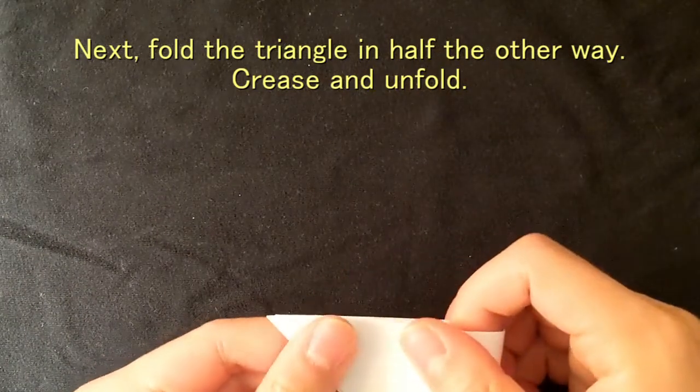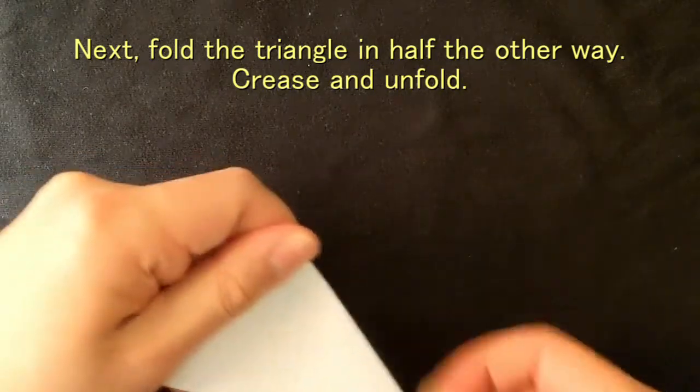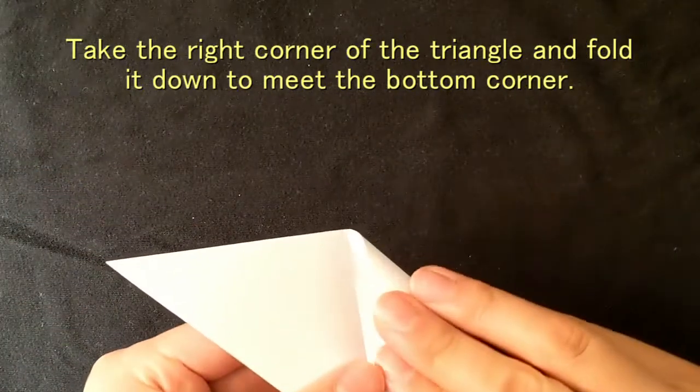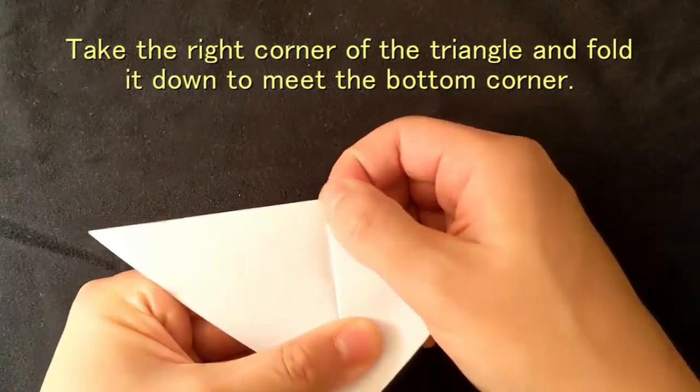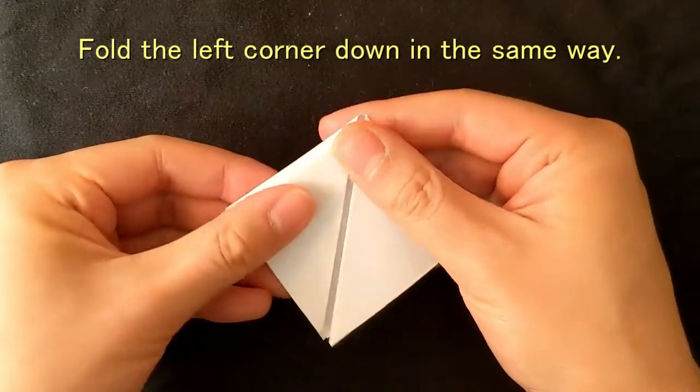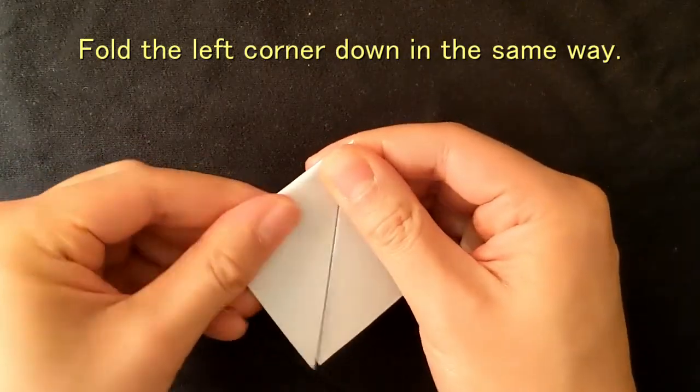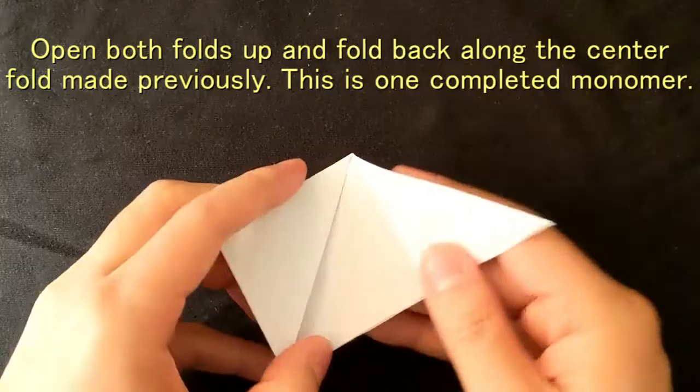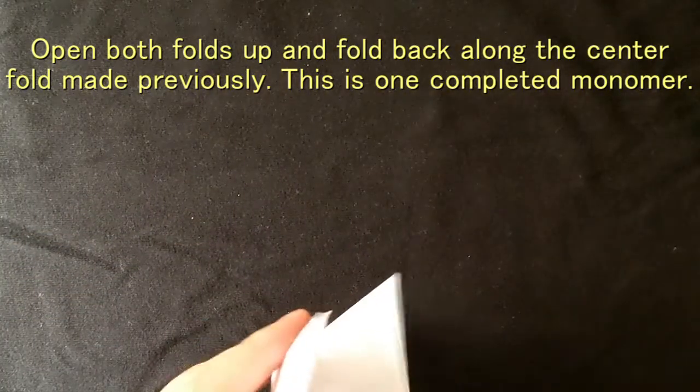Next, fold the triangle in half the other way. Crease and unfold. Take the right corner of the triangle and fold it down to meet the bottom corner. Fold the left corner down in the same way. Open both folds up and fold back along the center fold made previously. This is one completed monomer.